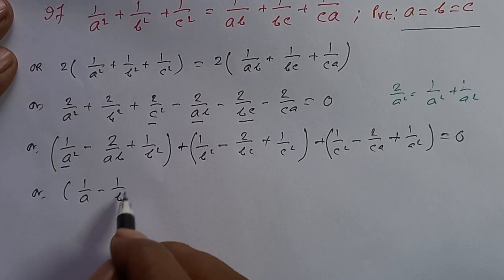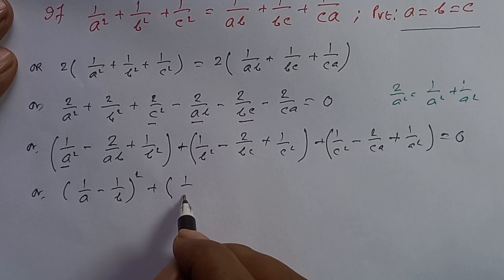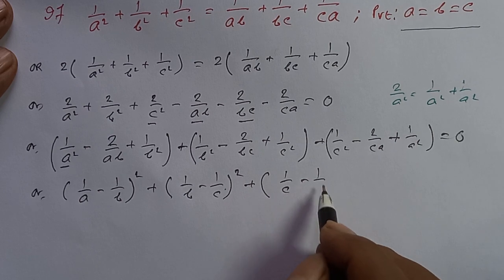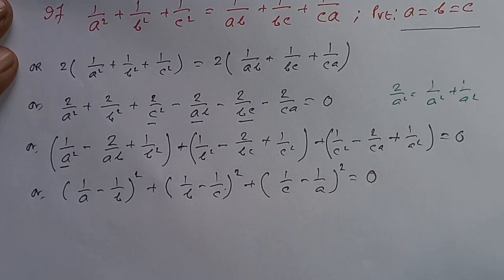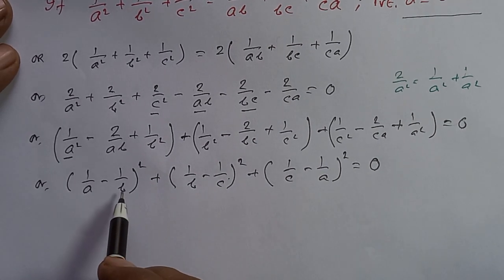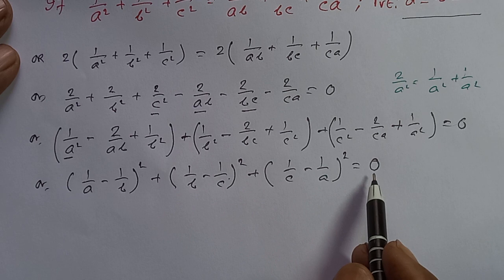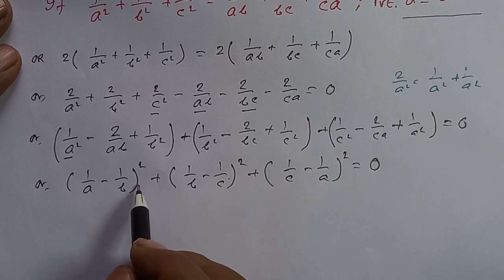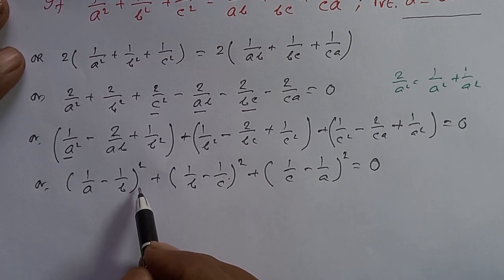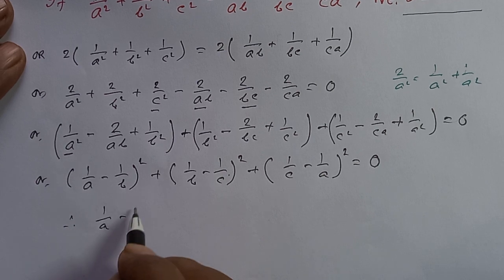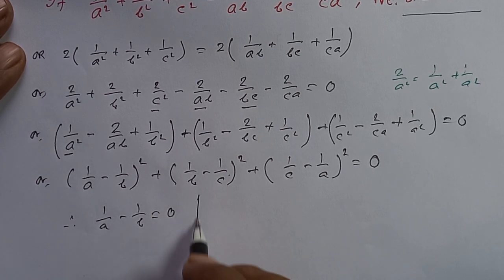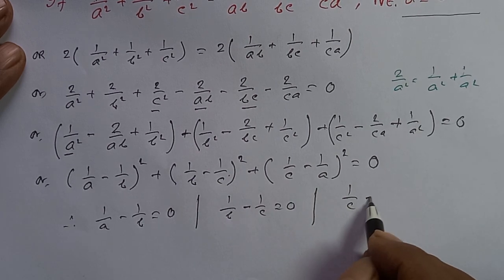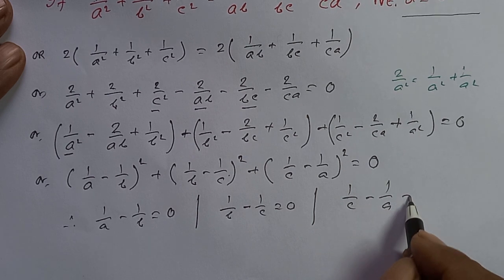This gives us 1 by a minus 1 by b whole square, plus 1 by b minus 1 by c whole square, plus 1 by c minus 1 by a whole square, all equal to 0.